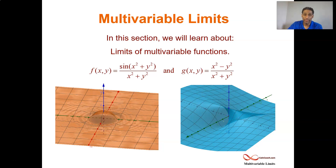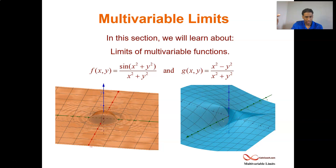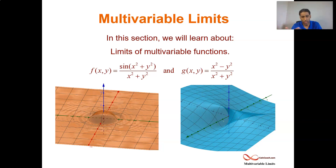Welcome to this video on multivariable limits. We're going to look at having a multivariable function and how it works to take a limit. We know about single variable limits — in single variable limits, as x approaches a, it's either approaching from the left-hand side or the right-hand side. We could do one-sided limits, but if we don't have any indication, then we're looking at approaching from both sides and seeing if they agree.